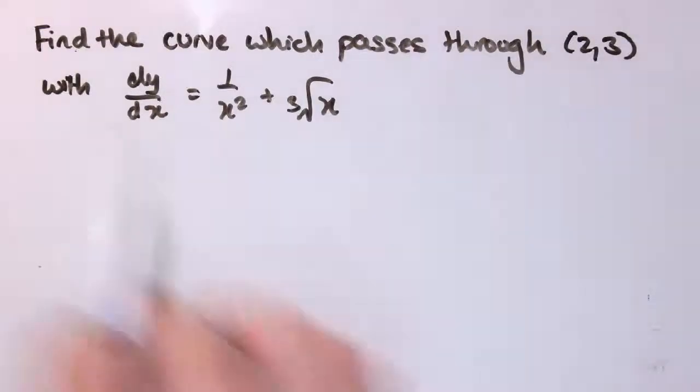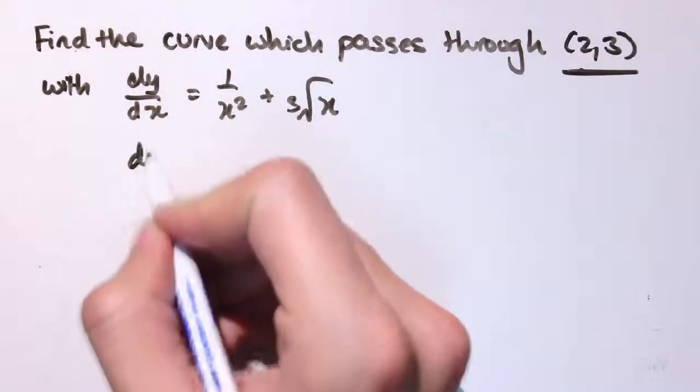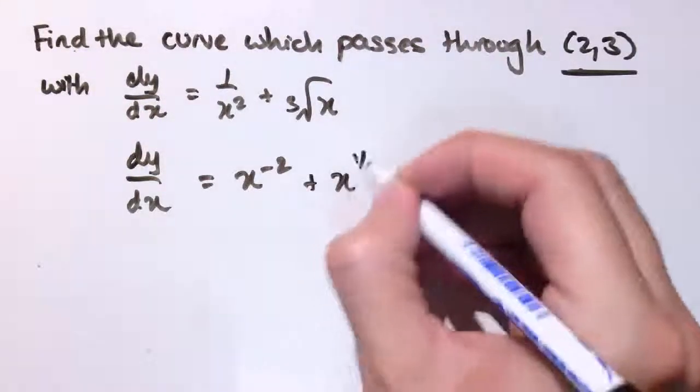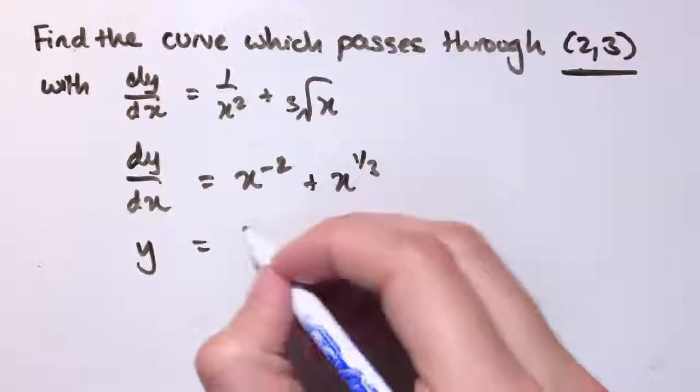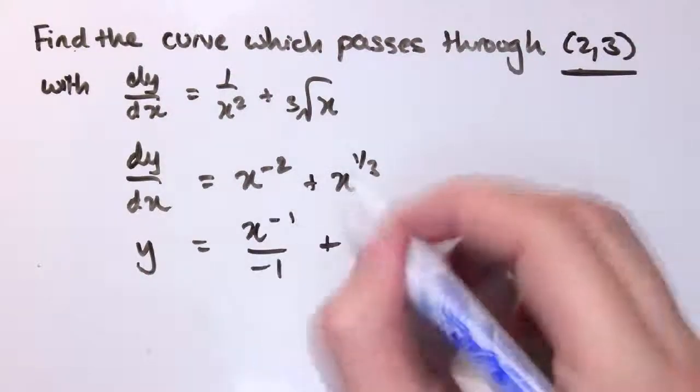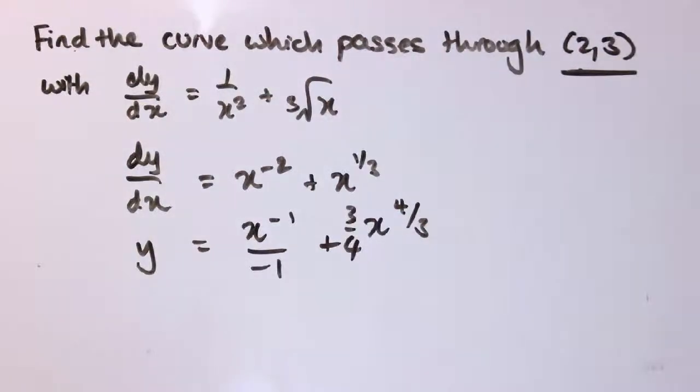One last question. Find the curve that passes through (2, 3) with dy/dx equals 1/x squared plus 3x. So we're going to be able to find out the value of c in this one because we know a point that it goes through. If we rewrite this first in index form, we get x to the minus 2 plus x to the 1 third. Increasing the power by 1 is x to the minus 1 divided by minus 1, and increase the power by 1 to get x to the 4 thirds, divide by the new power. So that's 3 quarters x to the 4 thirds plus c.